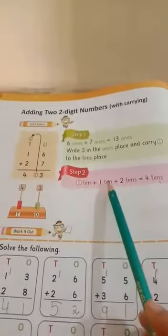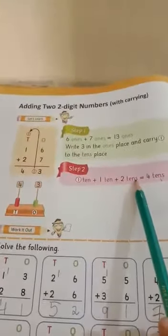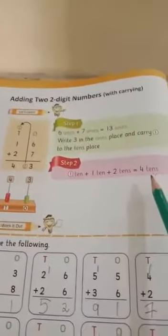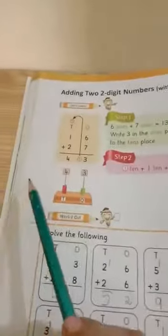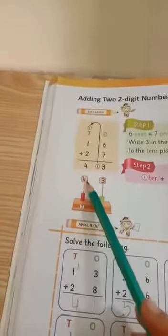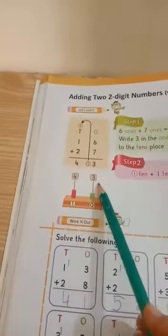6 ones, 7 ones, 13 ones. Write 3 in the ones place and carry 1 to the tens place. Step 2: 1 ten plus 1 ten is equal to 2 tens, 2 tens plus 2 tens is equal to 4 tens. 4 and 3.